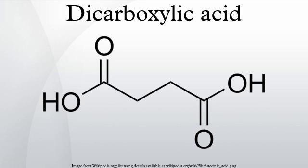Linear saturated dicarboxylic acids have the general formula HO2C-(CH2)n-CO2H. Many linear dicarboxylic acids with this formula are found in nature. They are also known as alpha,omega-dicarboxylic acids, meaning that the two carboxylate groups are at the two ends of the aliphatic chain of methylene groups. A mnemonic for the first nine is: Oh My Such Good Apple Pie, Soup And Syrup.